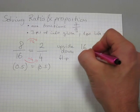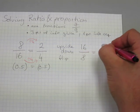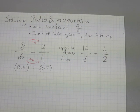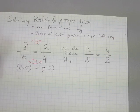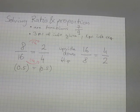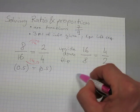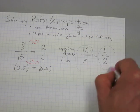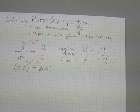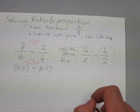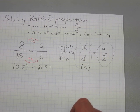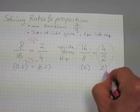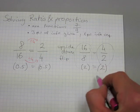This is how it looks: 16 over 8 equals 4 over 2. We changed the fraction from 8 over 16, a proper fraction, into an improper fraction — now it's 16 over 8. What I'm concerned about is that the values of these divisions are preserved and they indeed equal. 16 divided by 8 is 2, and 4 divided by 2 is also 2 — so 2 equals 2.